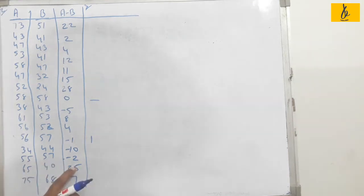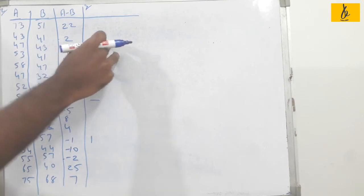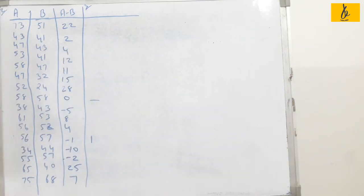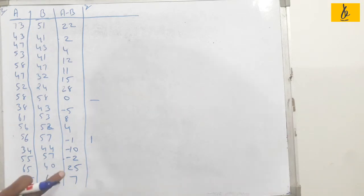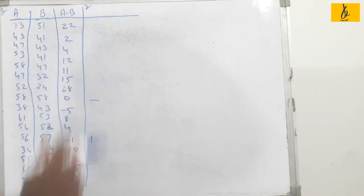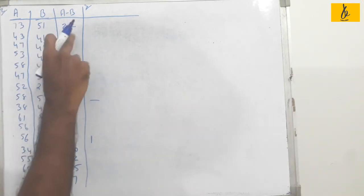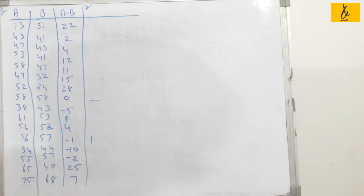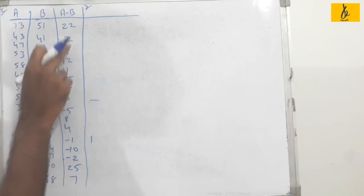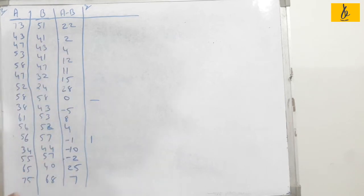To assign ranks, we use the rank method. For tied values, we find the average rank. For example, if two values share ranks 2 and 3, the average rank is 2 plus 3 divided by 2, which equals 2.5.